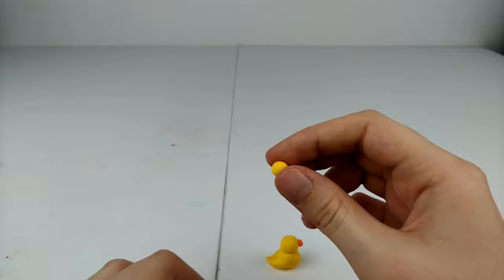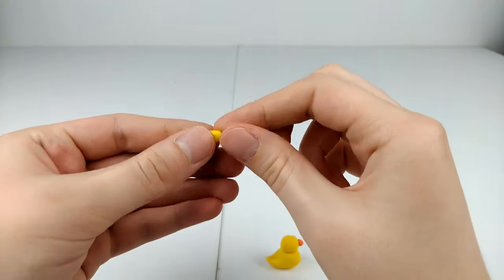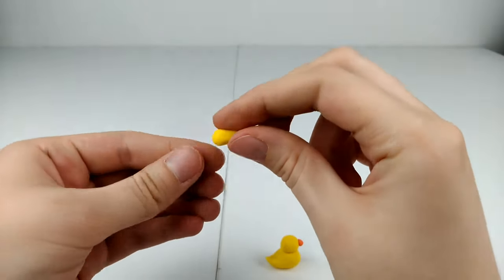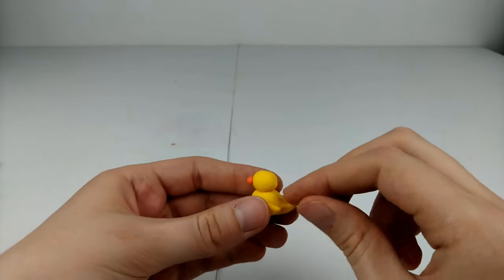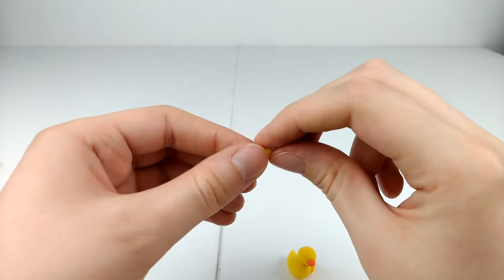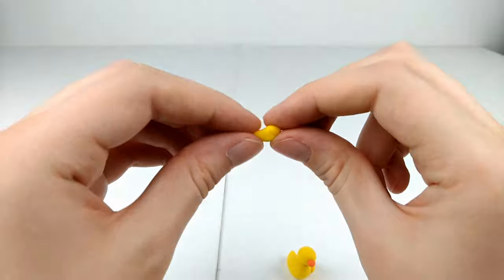Moving on to the duck's wings, we're going to take a small ball of clay and pinch one end into a teardrop shape and then just kind of flip it up so it has a curved tip. Then do the same for the other side.